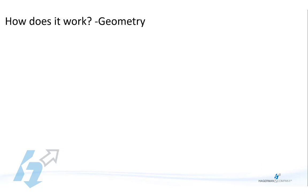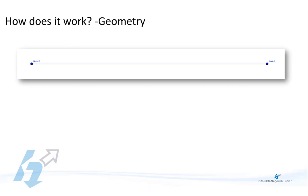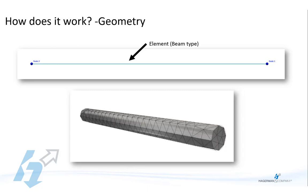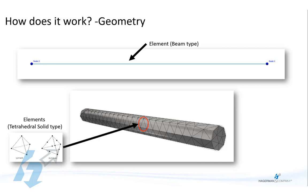Let's look at the geometry piece. This is an element — the building block of the FEA model. This is a type called a beam, and it's meant to be a simpler way to represent real-world 3D objects, like this bar. These beam elements are available in Inventor Professional, but only if you have built the geometry using the frame generator. More commonly in Inventor Stress Analysis, you'll be using 3D geometry, which uses a different element type — in this case, tetrahedral solid elements. The other important piece of FEA geometry is the node, where elements connect to one another and where forces and constraints are applied. They are also the points where we get results back from the solver.